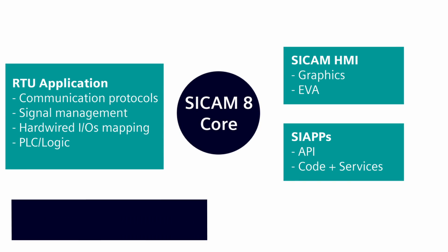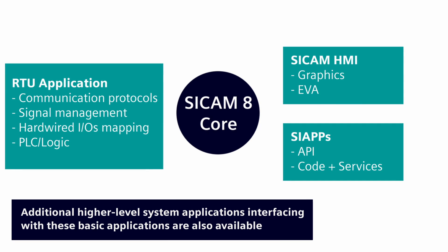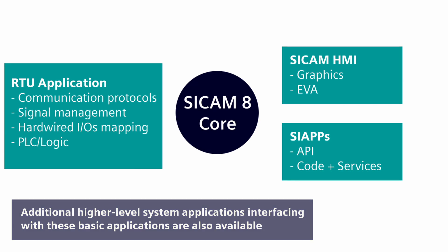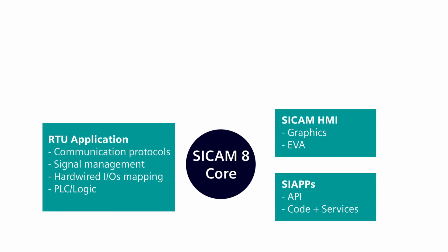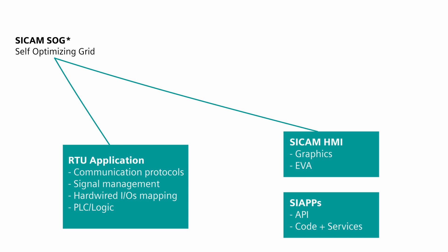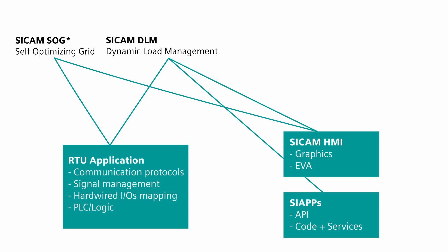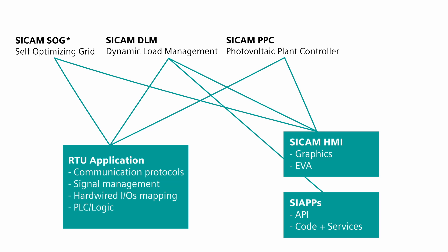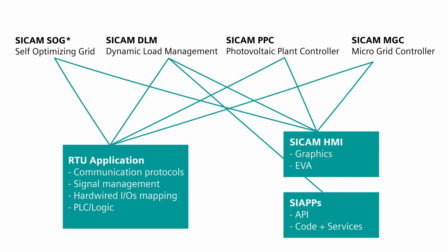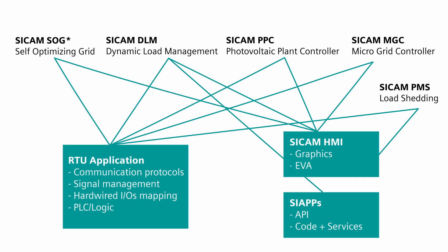Additional higher-level system applications interfacing with these basic applications are also available for the CCAM8 platform. Notable examples are the CCAM self-optimizing grid, CCAM dynamic load management, CCAM photovoltaic controller, CCAM microgrid controller, and CCAM power management system. These higher-level applications interface with the RTU, CCAM HMI, and with SIAPP applications to provide comprehensive solutions to several customer needs.